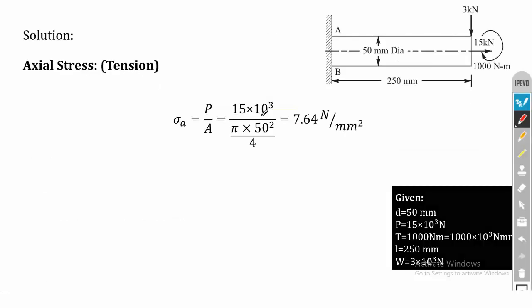First we calculate the axial stress. It is a tensile load and the equation is σ_A = P/A. With P = 15 into 10³ Newton and the circular cross-section area A = π/4 × D² = π × 50² / 4, solving gives σ_A = 7.64 Newton per mm square. This is the axial stress.